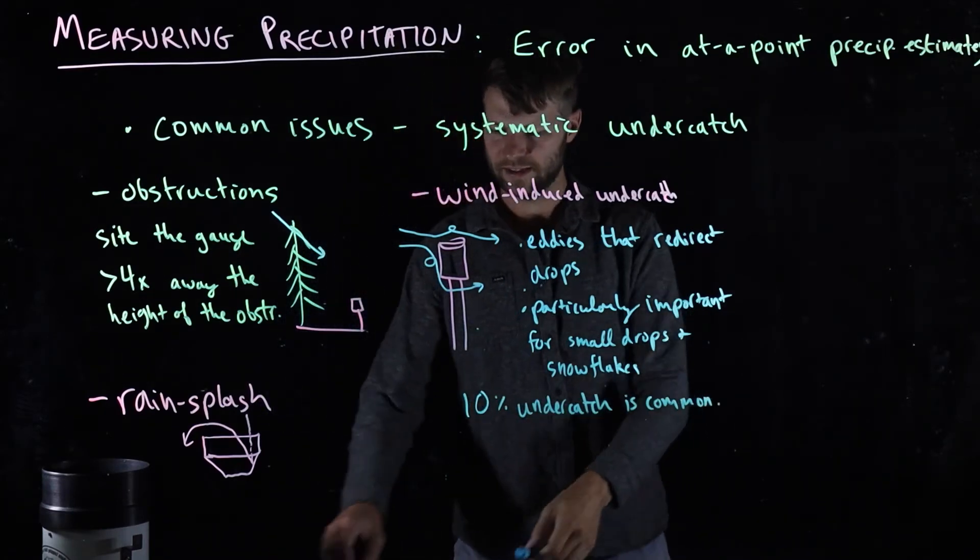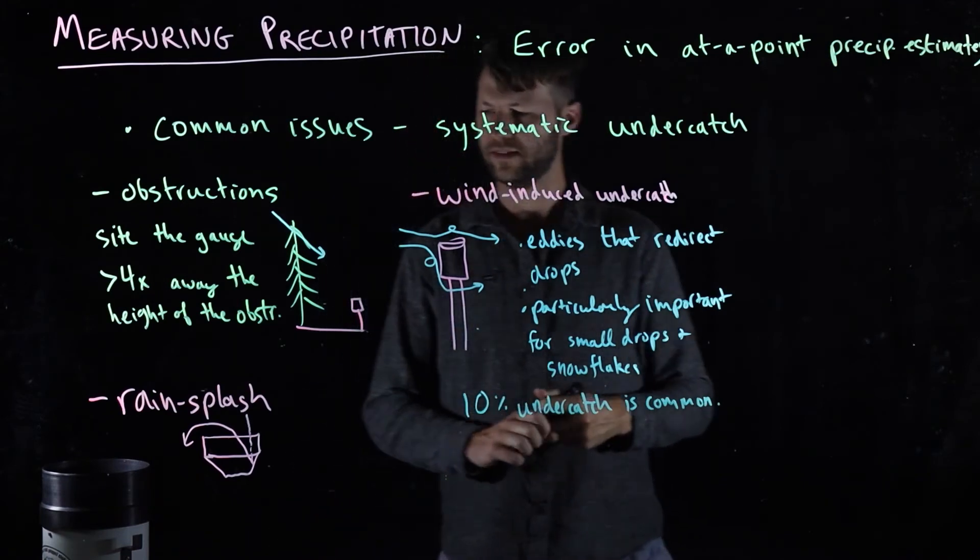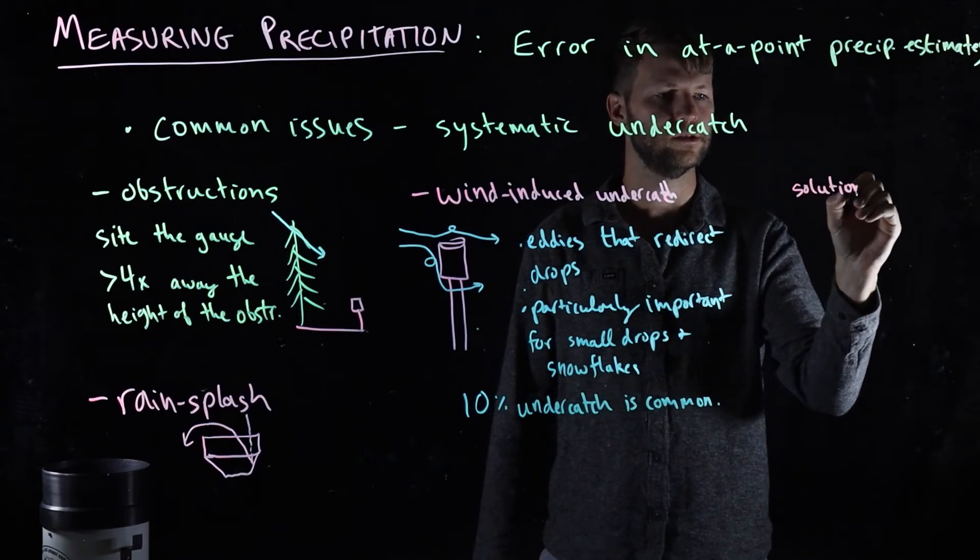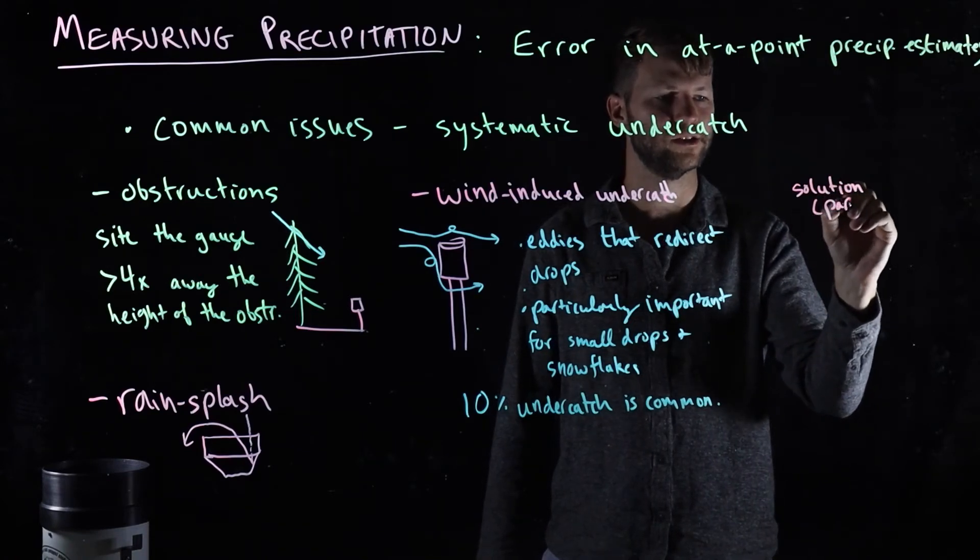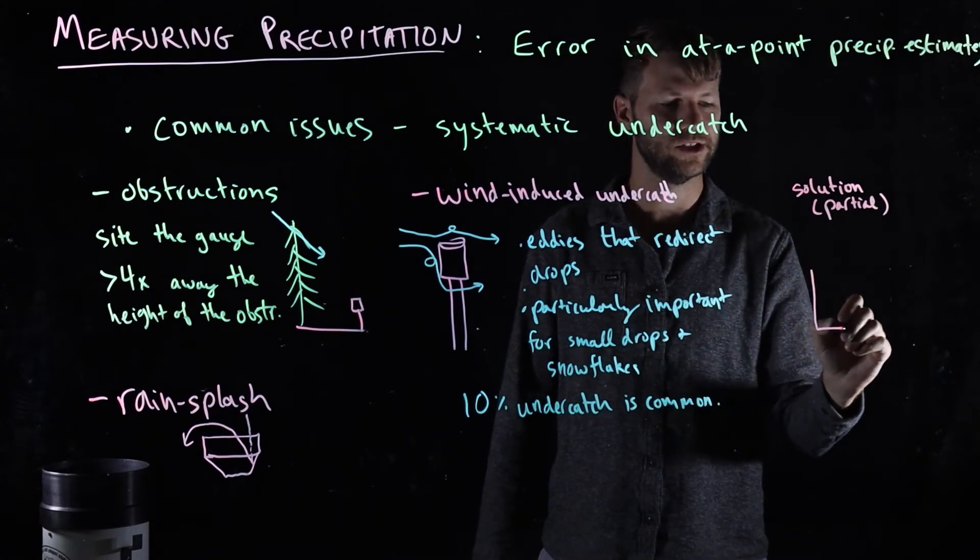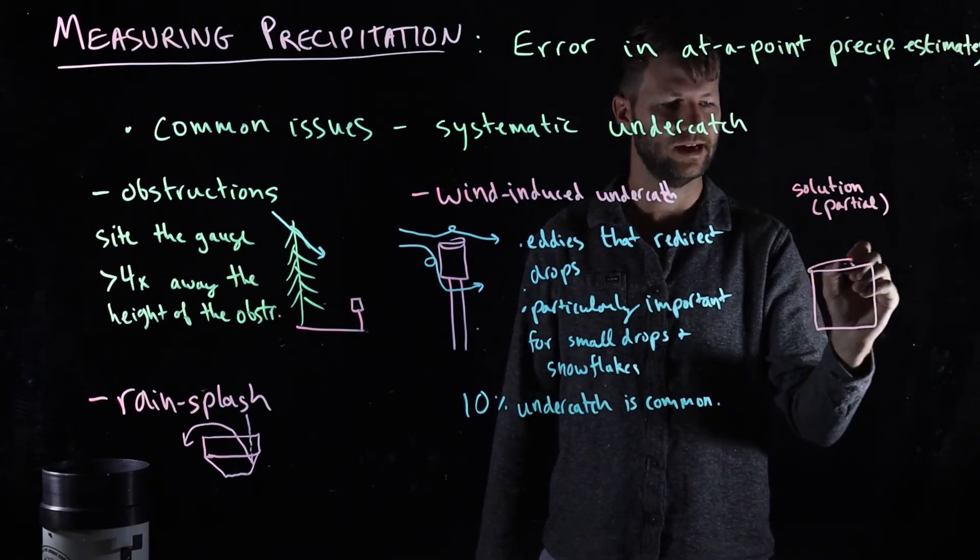One of the ways that we deal with wind-induced undercatch—a solution, a partial solution, it's not perfect—is by making a little shield around the gauge.